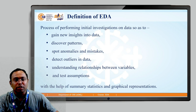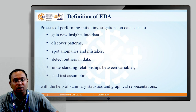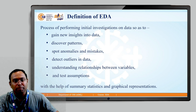Point number 3 is spot anomalies and mistakes. There can be mistakes in the data — mistakes are nothing but some wrong data, and finding out such mistakes is one of the initial investigations we can make with the help of EDA. Now let us talk about anomalies. An anomaly is nothing but an abnormal value. For example, a doctor analyzing blood pressure for a patient — if the values of blood pressure are more than or less than the normal range, that can be an anomaly. Such anomalies can be easily detected with the help of exploratory data analysis.